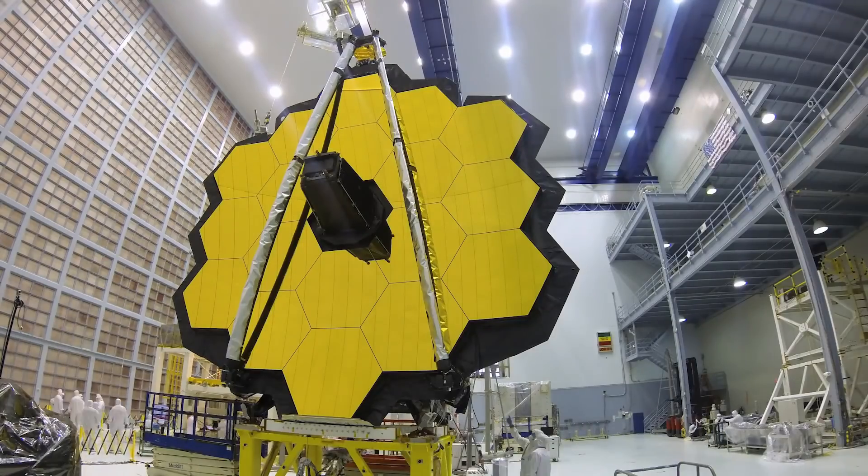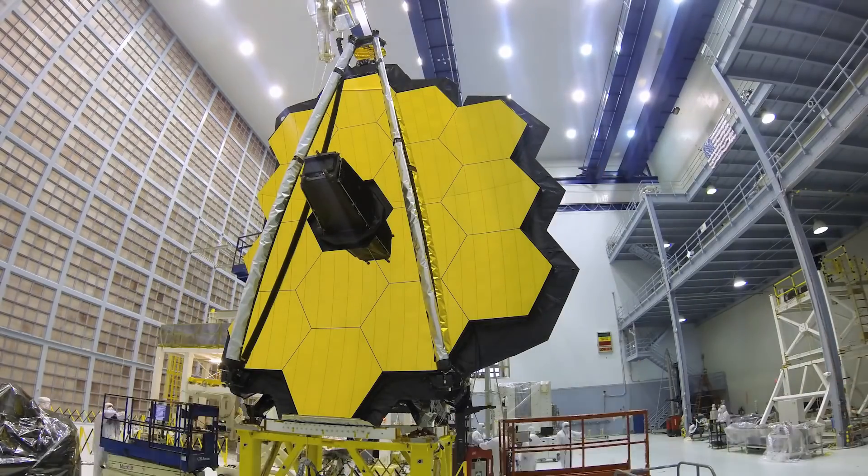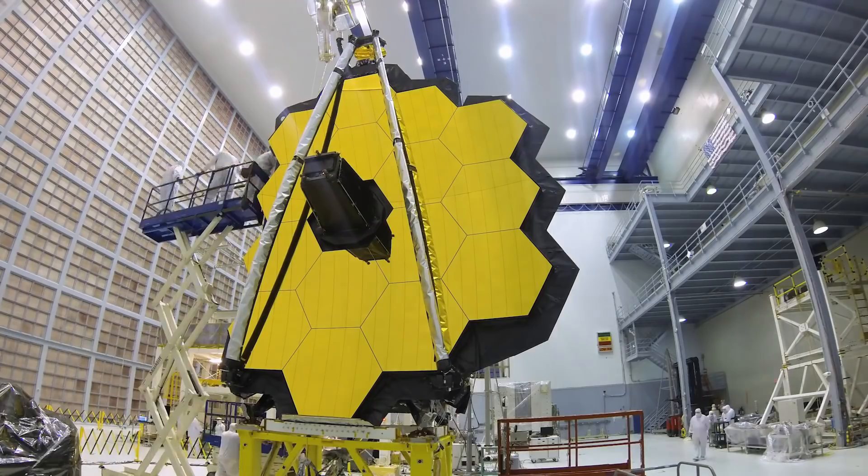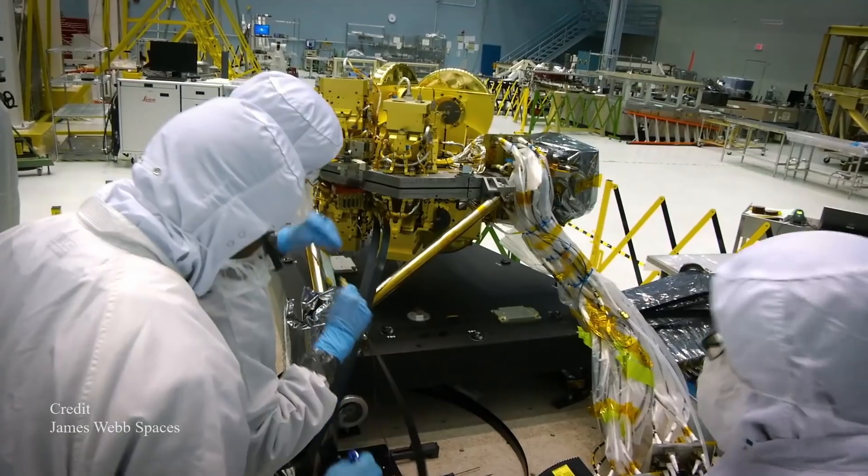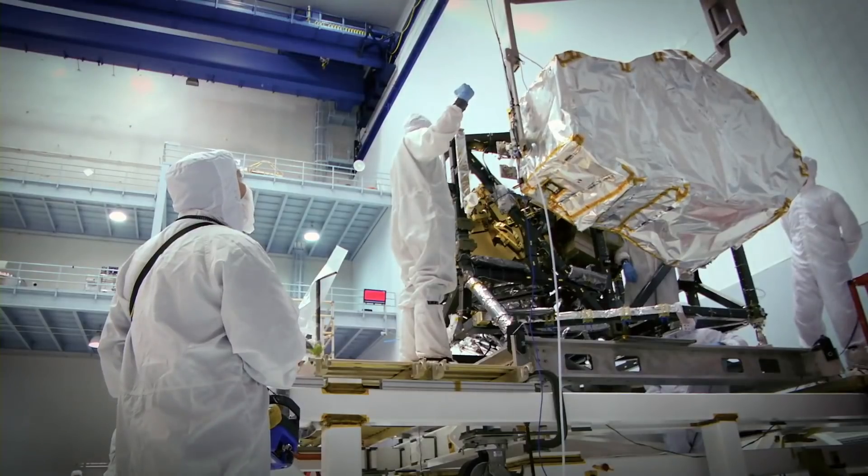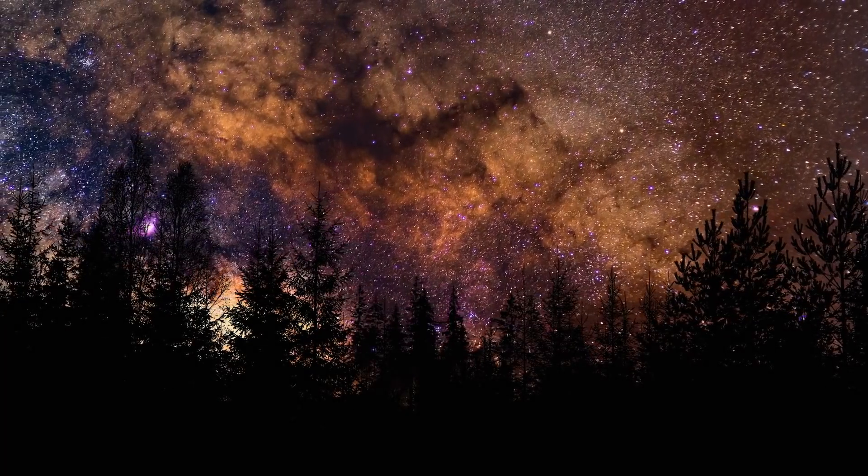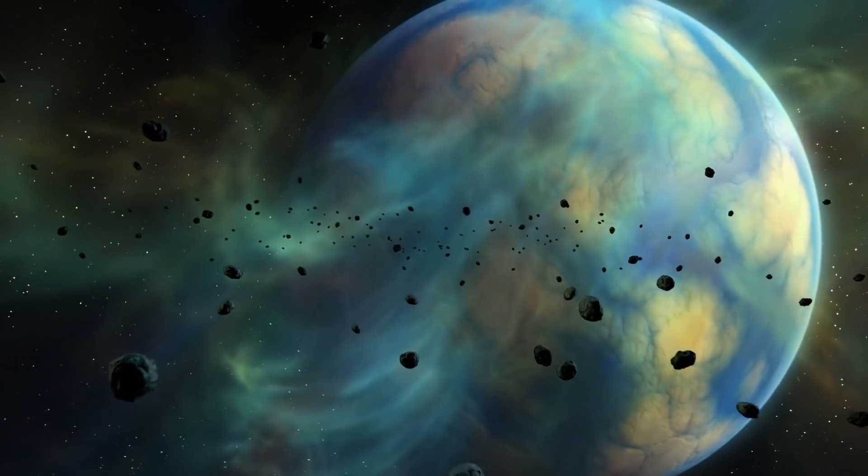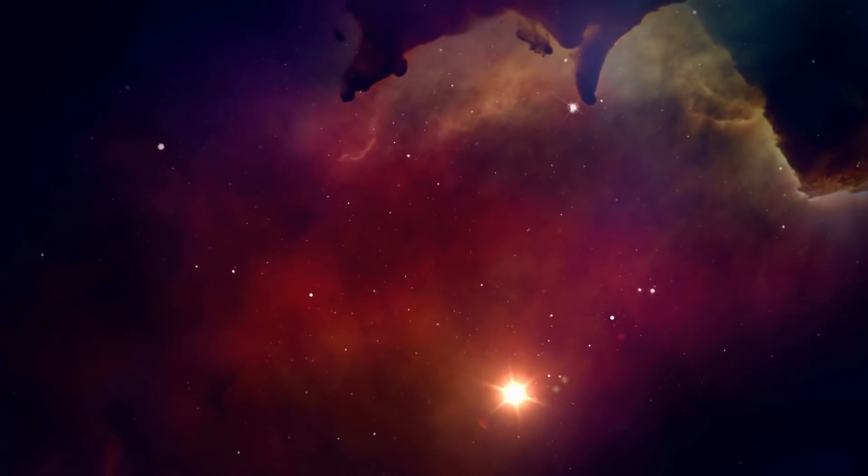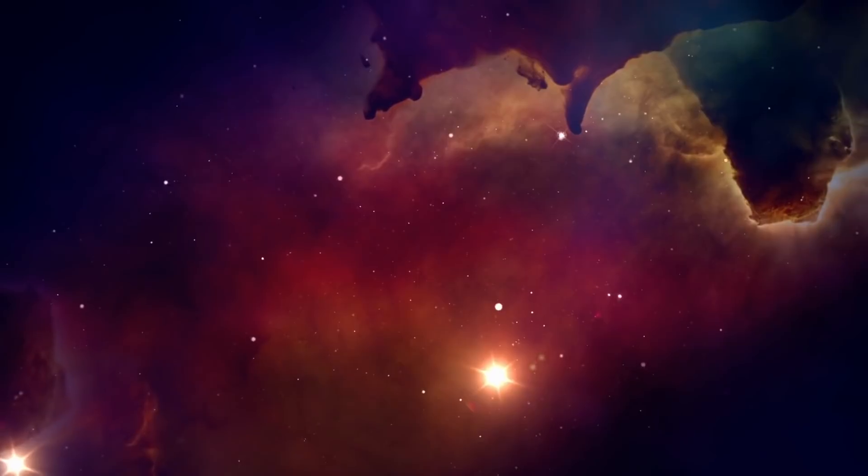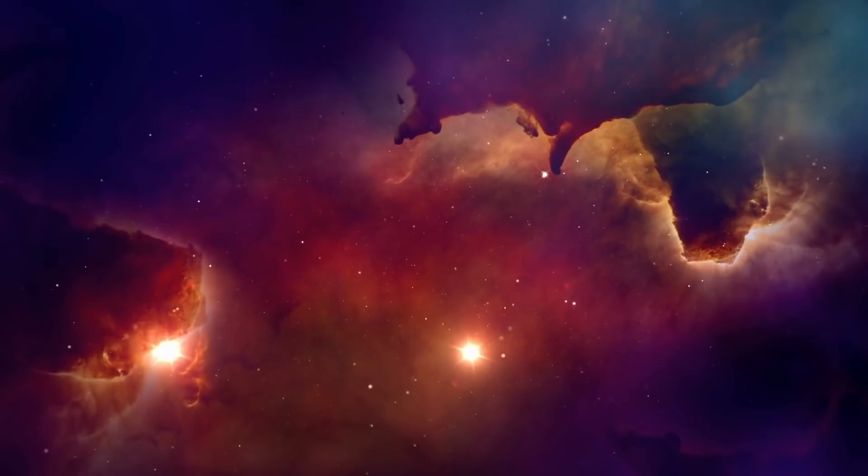James Webb weighs approximately 13,670 pounds and will be used to perform functions that cut across various fields in astronomy and cosmology. From studying the formation of the first stars and galaxies ever formed in the universe to hunting for signs of life in the atmospheres of neighboring alien planets, James Webb is going to be a phenomenon studying other fascinating phenomena in space.